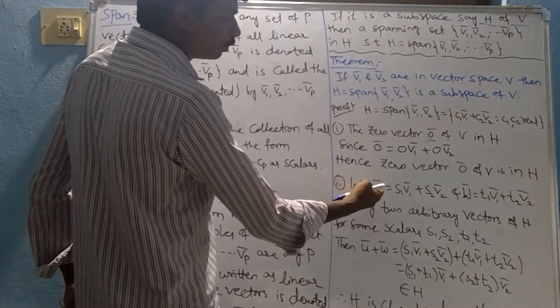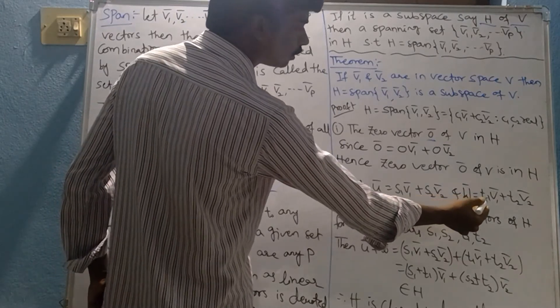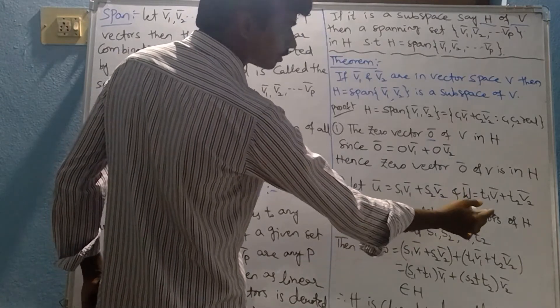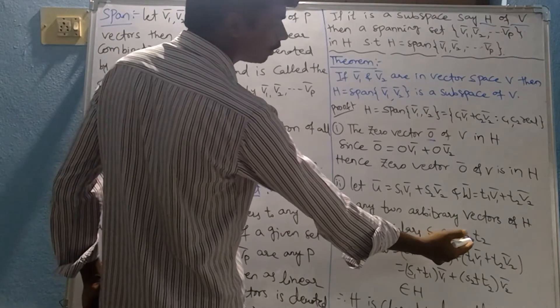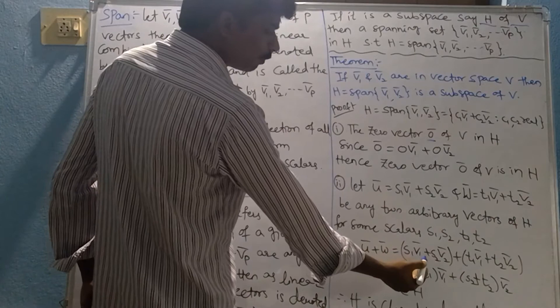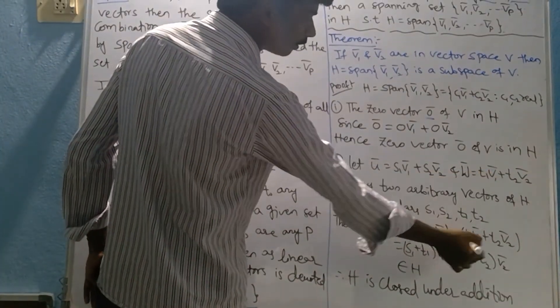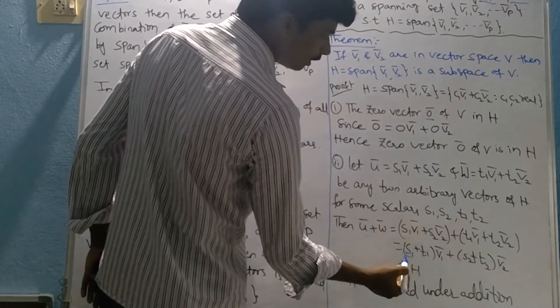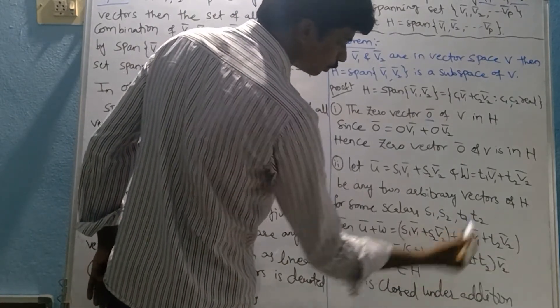Property number 2: Let U bar equal S1 V1 bar plus S2 V2 bar, and W bar equal T1 V1 bar plus T2 V2 bar be any two arbitrary vectors of H, for some scalars S1, S2, T1, T2. Then U bar plus W bar equals S1 V1 bar plus this one, plus W bar, this one. Taking the common terms V1 bar and V2 bar, we get (S1 plus T1) into V1 bar plus (S2 plus T2) into V2 bar.